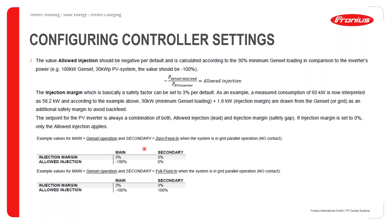There are two input case scenarios. In the first, the genset is the main operation and the grid is secondary — achieved using a normally open (NO) contact. With genset running, injection margin is 3% and allowed injection is minus 100%. When the grid returns, the genset switches off via the ATS, and the allowed injection changes — either to 0% for municipalities that don't allow feed-in, or up to 100% for those that do permit grid feed-in.